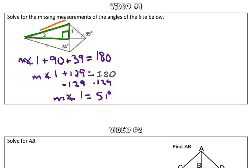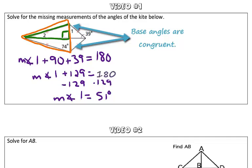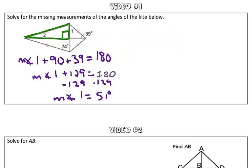And since an isosceles triangle has base angles that are congruent, if this angle down here is 74 degrees, the other base angle of the isosceles trapezoid is also 74 degrees. So this angle in this triangle right here is 74 degrees as well.